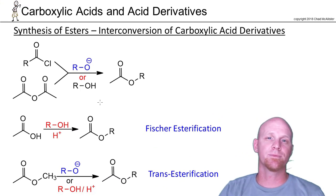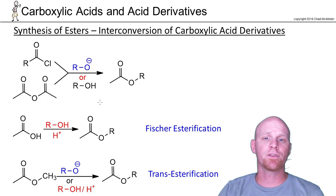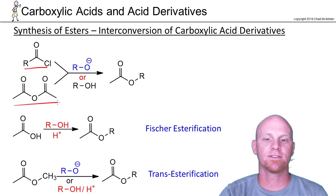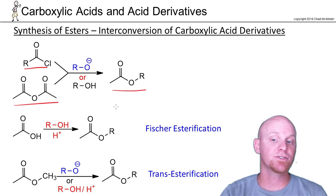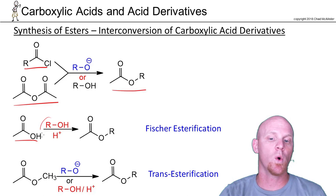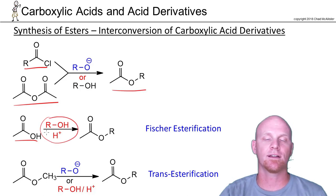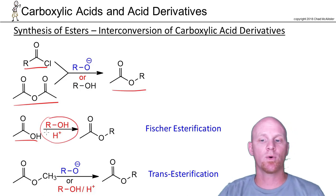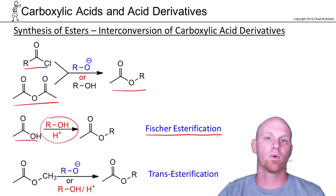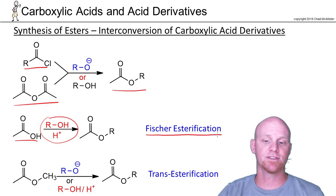You can also make esters from the interconversion of all the other different carboxylic acids and derivatives. We just talked about acid chlorides and acid anhydrides and how we can turn them into esters. It turns out you can also do it with a carboxylic acid, but only with an acid catalyst. You have to have the appropriate alcohol with an acid catalyst, and we call this the Fischer esterification. We're going to go through the mechanism on this one because it's one of the more important reactions in this section.